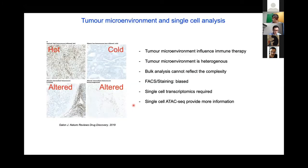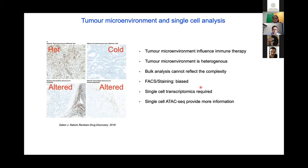Tumor microenvironment influences both tumor progression and response to immunotherapy. This picture shows the hot, altered, and cold tumor with broad dense CD3 T cells, and you can appreciate that they have different T cell infiltration status. The tumor microenvironment is very heterogeneous, and understanding that heterogeneity is important. Traditional bulk analysis cannot reflect the complexity of the tumor microenvironment because one can only see the average results. Single-cell analysis is required and can provide more information, especially on chromatin opening and closing status, helping to infer regulatory elements compared to single-cell RNA-seq.